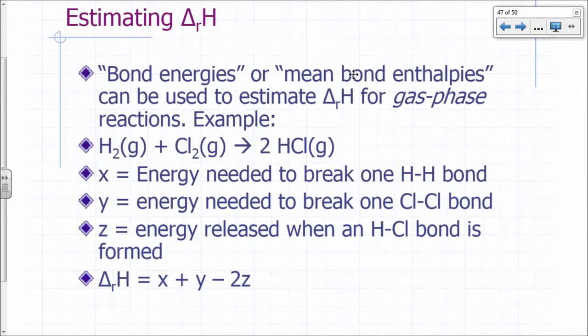Bond energies or mean bond enthalpies can be used to estimate delta H of reaction for gas phase reactions. For example, H2 plus Cl2 gas gives you 2 HCl gas.